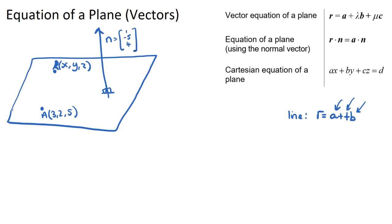To find the Cartesian equation of a plane we need two things: the normal vector to the plane, and a known point. If we have those two things, we can quite easily find the Cartesian equation of the plane.